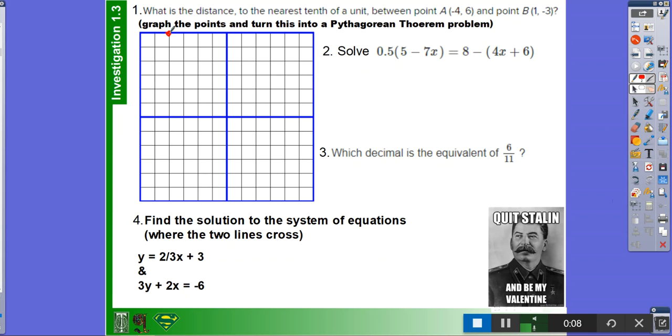So the first point is x equals negative 4, y equals 6. And then the second point is x equals 1, y equals negative 3. And then you connect those two.